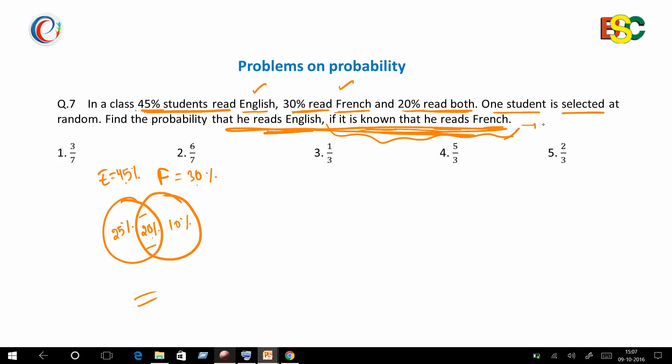Now since the condition represents those students who read French, the total number of cases will be 30%, because there are 30% students who read French. Now you have